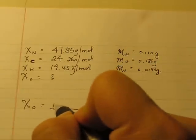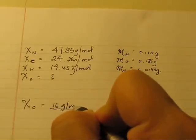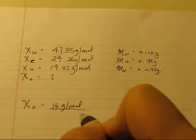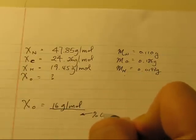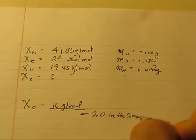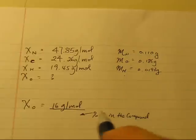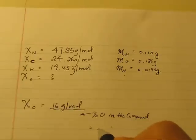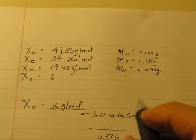So we are going to do this: 16 grams per mole over the percentage of oxygen in the compound. Now again, this is not given, so we are going to find out by doing this.